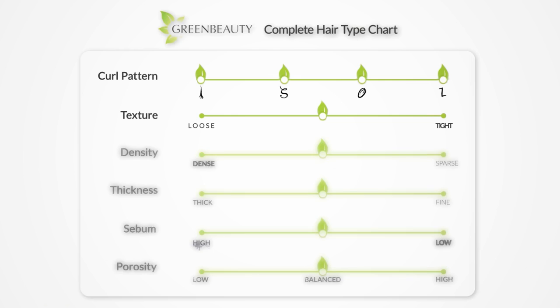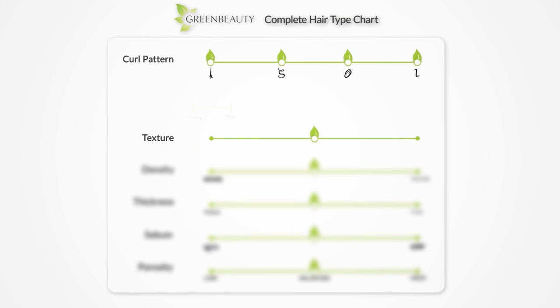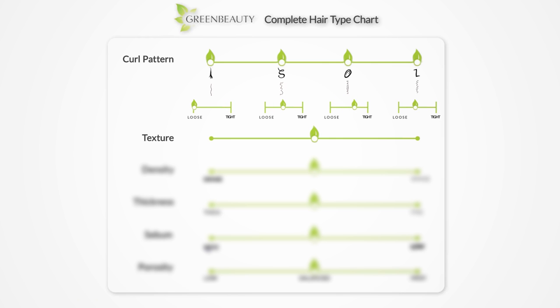As it pertains to natural hair, texture refers to how loose or tight your curl pattern is. So each curl pattern can be loose, tight, or somewhere in the middle. It's a measure of your shrinkage.